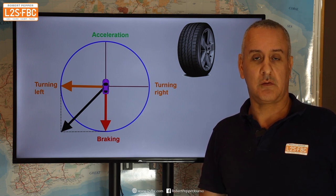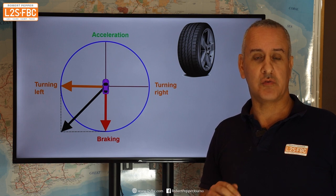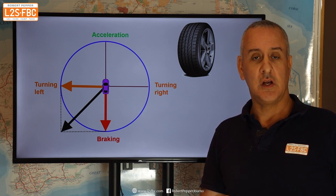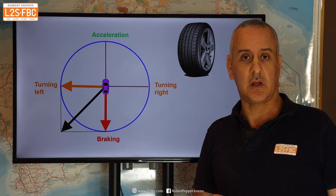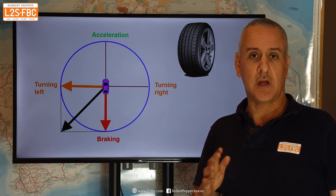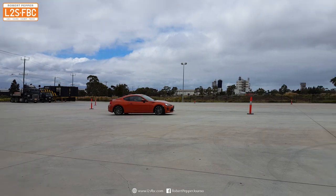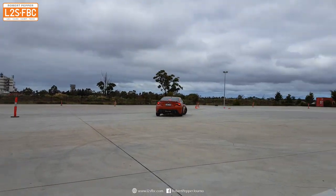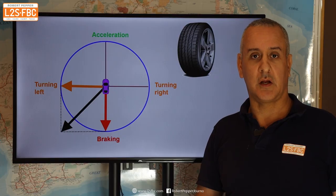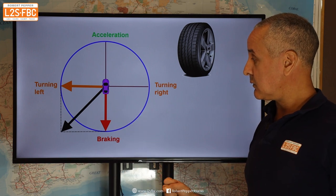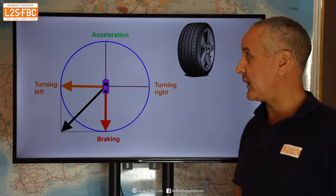You know that from driving a car. If you're absolutely on the edge of braking adhesion, the car won't turn unless you reduce that braking. Similarly, if you're on the edge of cornering adhesion, accelerating hard or braking will send you into a spin or slide. The circle of traction is a really good model for explaining that.